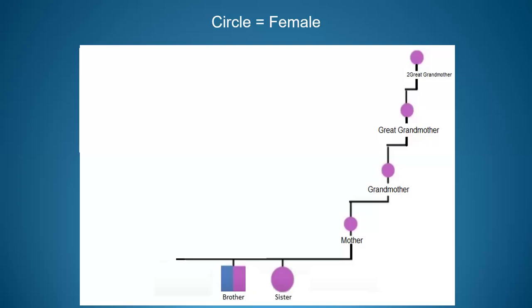Looking at the chart again — males imagine the square at the bottom labeled 'brother,' females the circle labeled 'sister.' When we take a mitochondrial DNA test, it only traces our mother's, mother's, mother's, mother's line going back hundreds of generations.